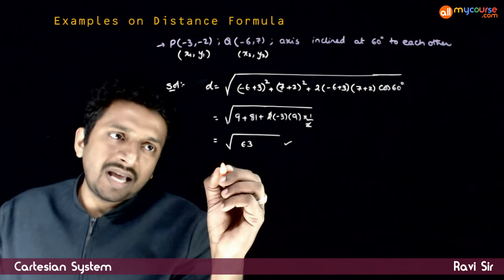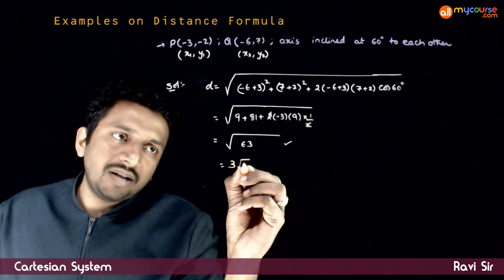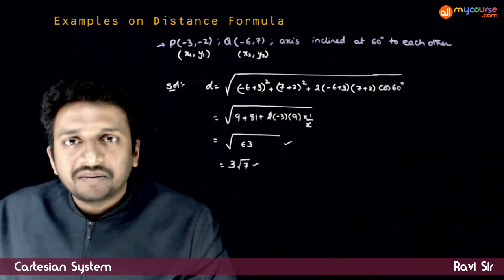Root 63 is 7 into 9. If you take 3 outside, you get 3 root 7 as the answer. Thank you.